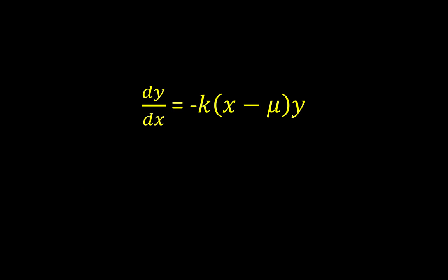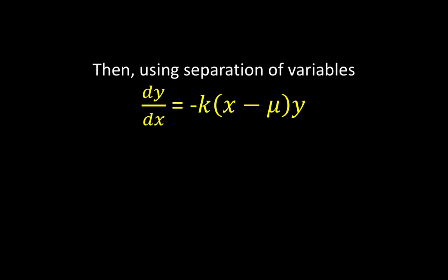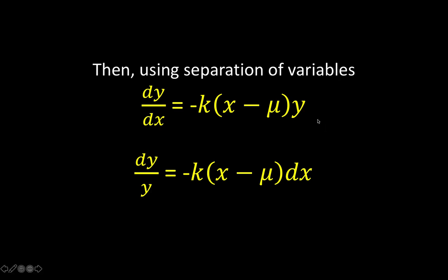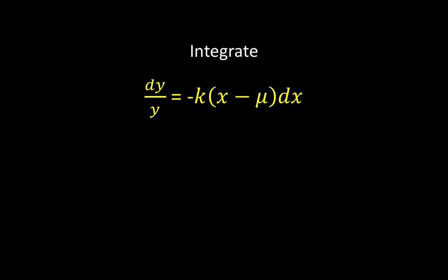What can we do to solve this equation for y? First, we can use the concept of separation of variables. Our goal is to gather all the x variables on one side and the y variable on the other side of the equation. We multiply both sides by dx and divide both sides by y to arrive at dy over y equals negative k times the quantity x minus mu times dx. Here mu is the population mean and x is a specific x-score.